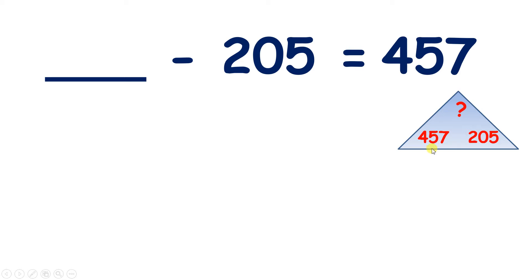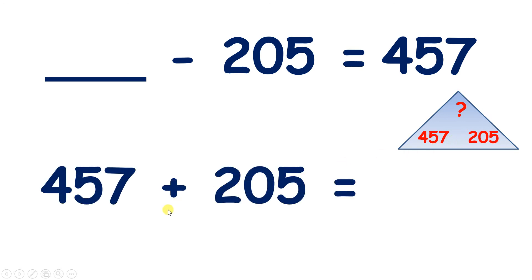And we know that with number family triangles, we can add the two bottom numbers to get the top number. So again, we can use the inverse operation. We can add to solve a missing number subtraction. So we need to add 457 and 205.